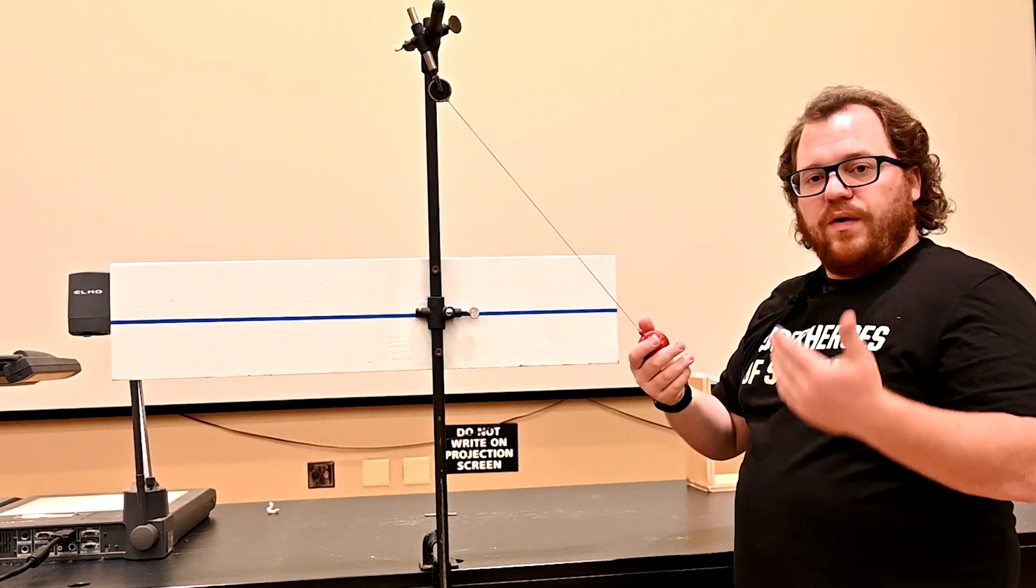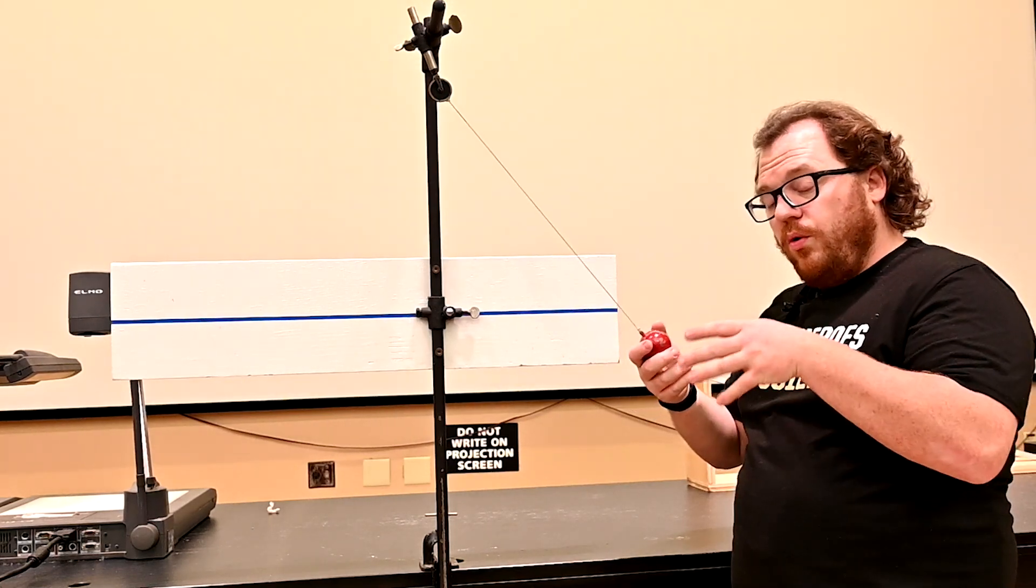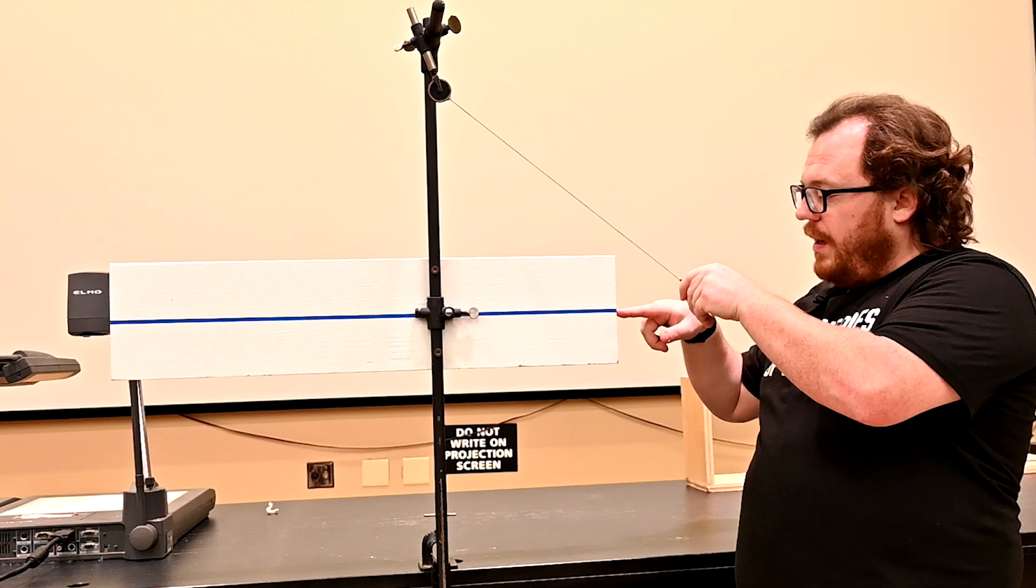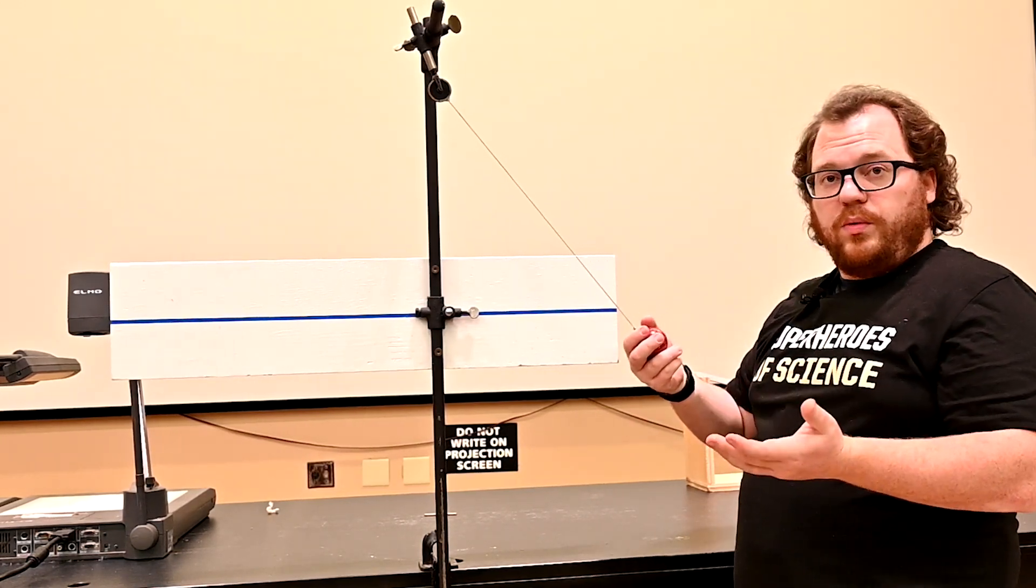Because that energy can't be created, can't be destroyed, the total amount of energy would stay the same. So if we release it from the height of the blue line, it should swing to the height of the blue line.